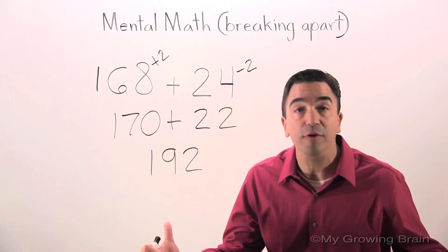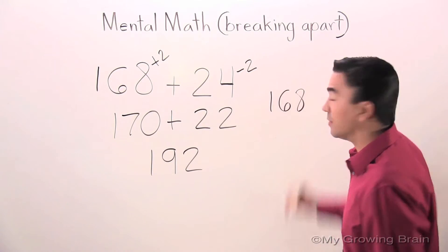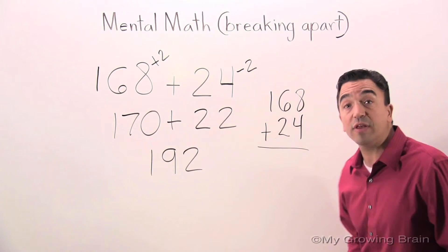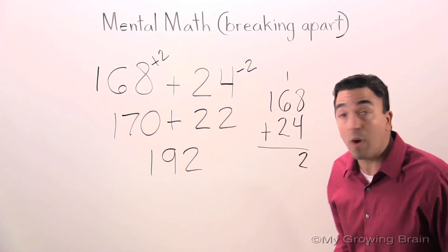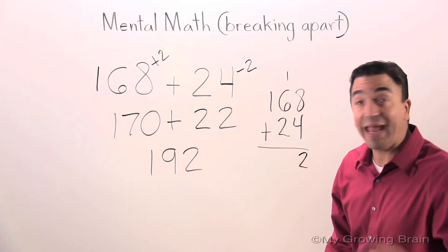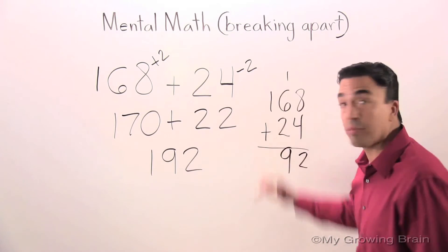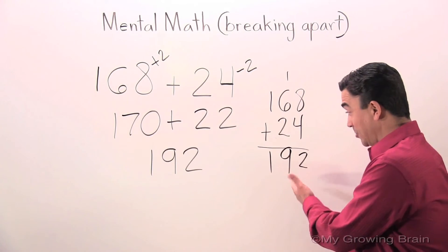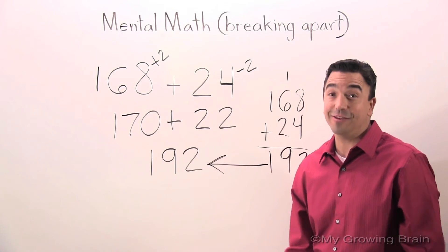Let's double check our answer. 168 plus 24. 8 plus 4 is 12. Regroup the 1. 6 plus 2, 8 plus 1, 9. Bring down the 1. What do you know? 192 is the same as 192.